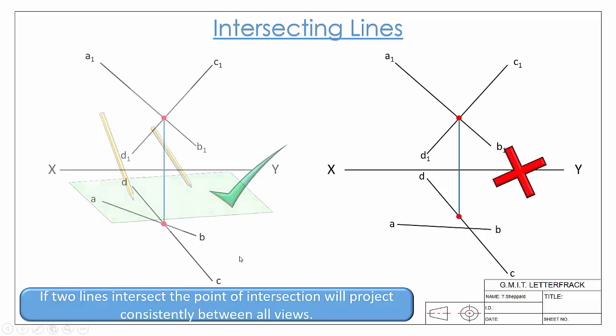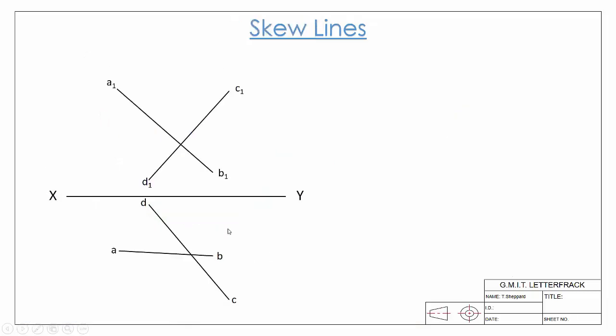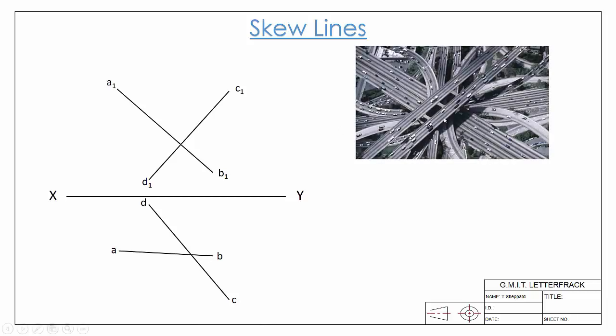Our final example is a skew line, which is simply defined as two lines that don't intersect and aren't parallel. If we look at an example of that, we have an overpass for a road. So the road here is over this road here...